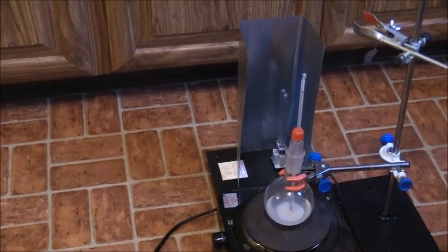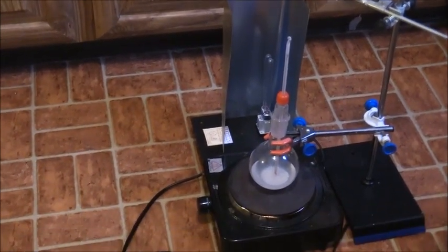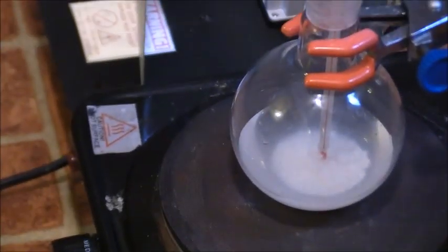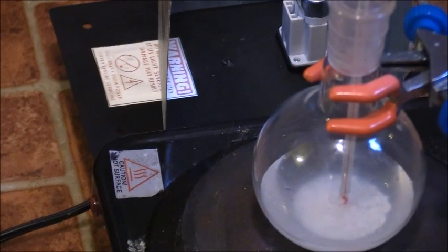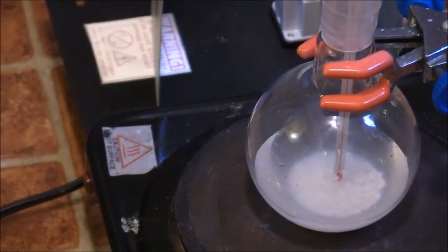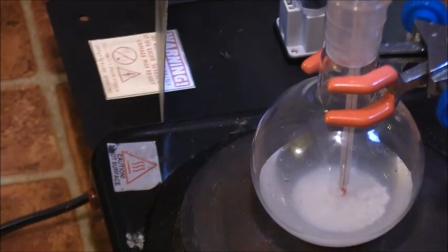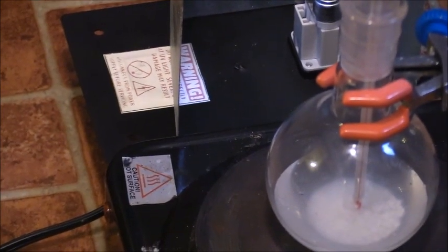What I have here is a solution of formamide, 60 milliliters of formamide, along with 2.4 grams of sodium pyrophosphate and 2.4 grams of calcium carbonate. 2.4 grams is actually 4% as per the original experiment.